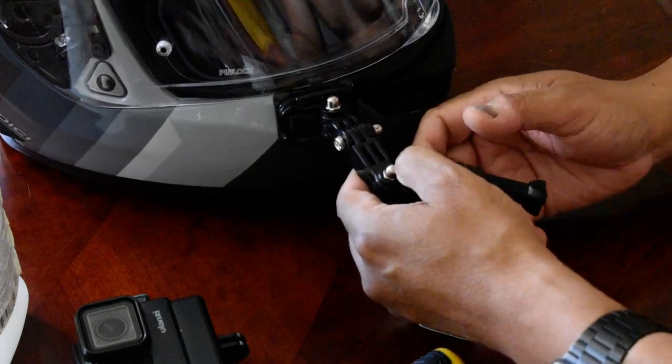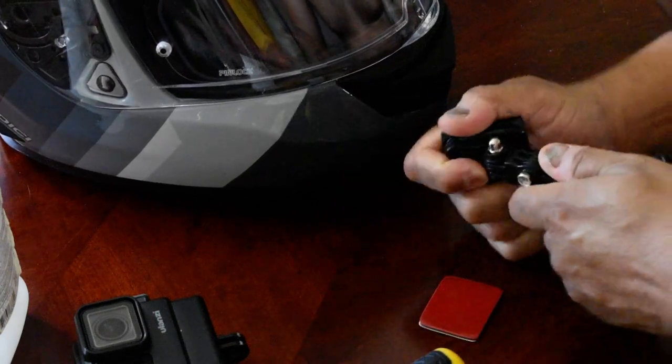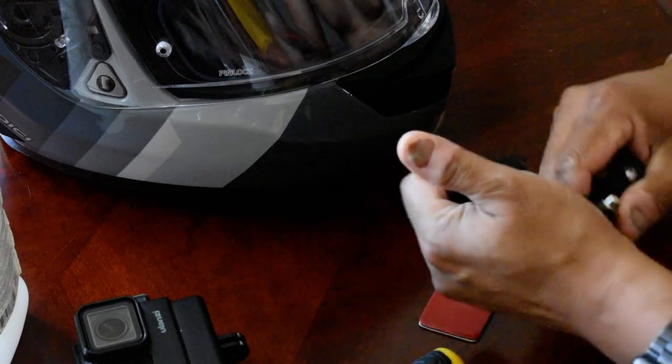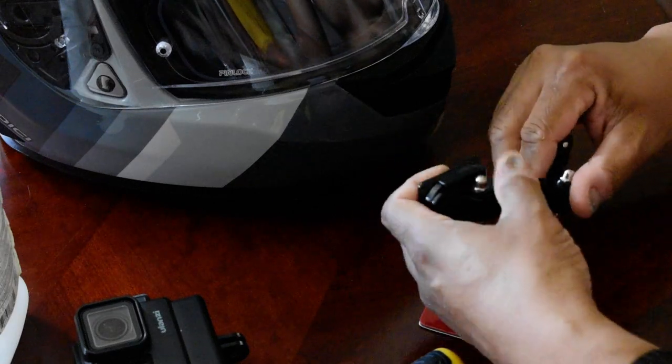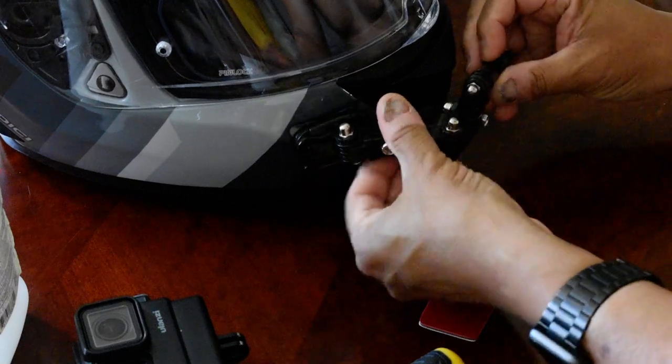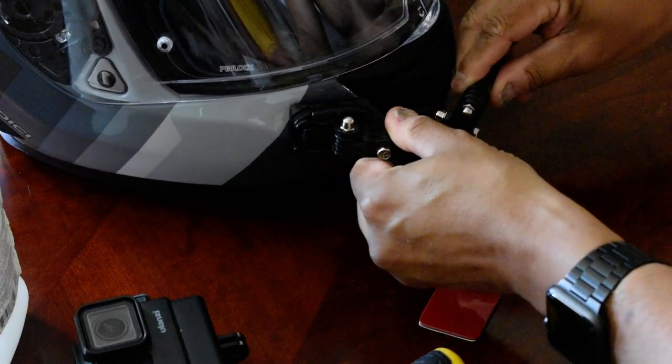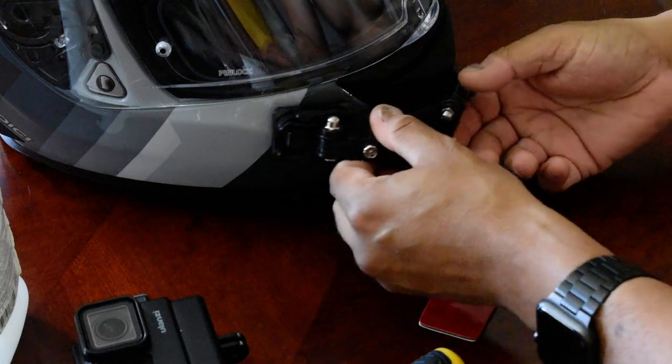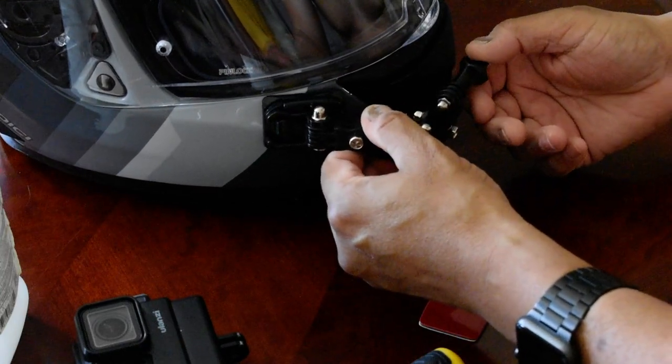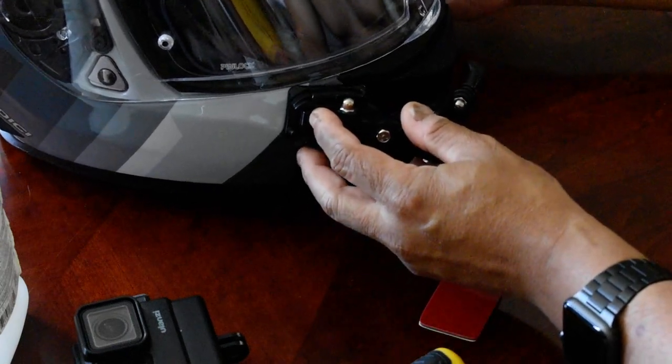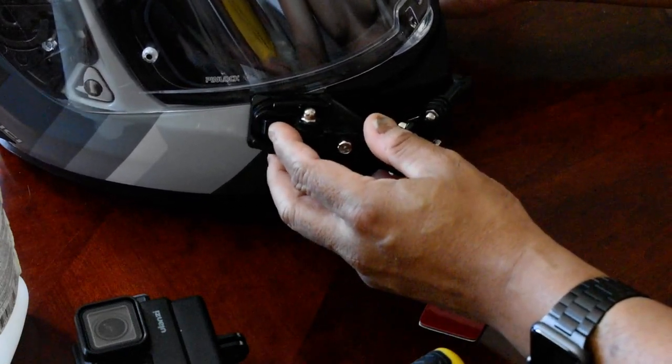I just need to bend this arm around the way it's going to end up. Like that. You can see it's starting to show up in front of the helmet the way I want it to be. This is going to be how it's installed, something like this.